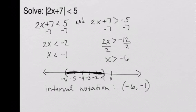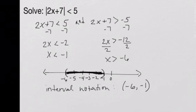Now let's look at a very similar problem and compare the difference. The previous problem had absolute value of 2x plus 7 less than 5. Notice when solved, the inequality pointing into the absolute value bars gave a solution that shaded toward each other. Now we compare that to the same numbers but with greater than 5 instead of less than 5, and let's see how that changes our solution.